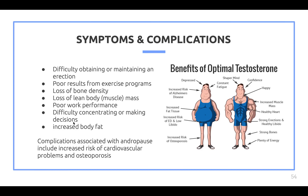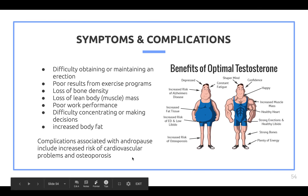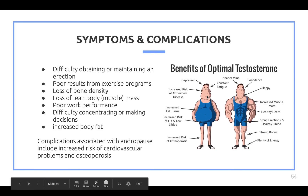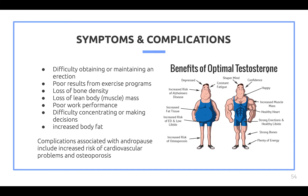Additional symptoms of andropause include difficulty obtaining or maintaining an erection, poor results from exercise programs, loss of bone density, loss of lean muscle mass, poor work performance, increased body fat, and difficulty concentrating. Complications include increased risk of cardiovascular problems and osteoporosis, meaning higher risk of bone fractures. By contrast, optimal testosterone levels are associated with increased muscle mass and overall wellbeing — essentially the opposite of these complications.